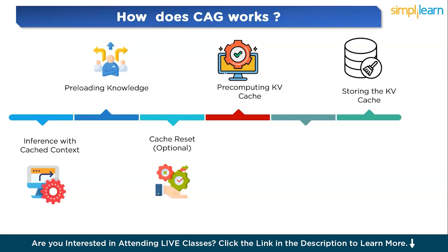CAG offers several benefits. First, no retrieval latency: unlike RAG, CAG eliminates the need for real-time retrieval, giving you faster response times. Second, a simpler pipeline: since there's no need to maintain an external database or perform retrieval steps, the system is simpler to manage and requires less computational overhead. Third, unified context: the model can process all relevant information at once, enhancing reasoning abilities, especially for multi-hop questions requiring information from multiple sources.